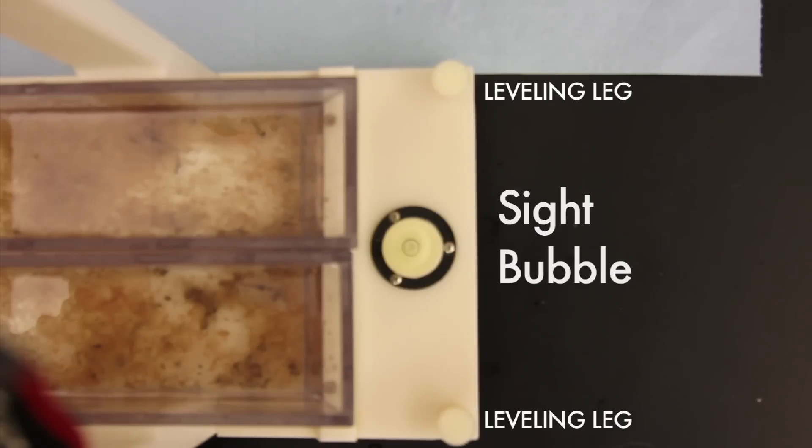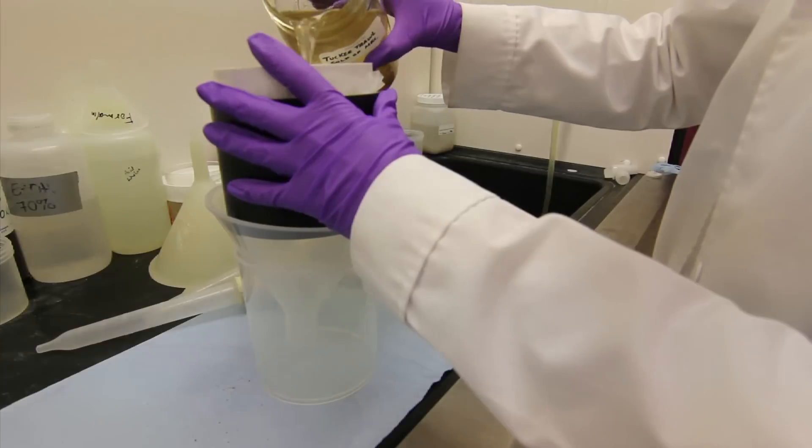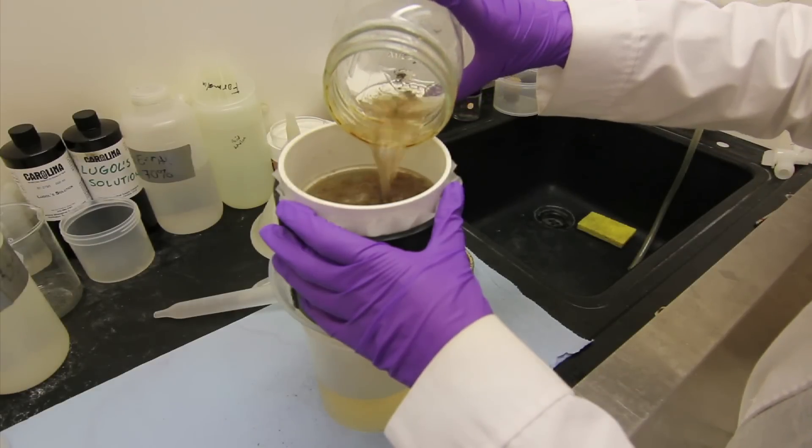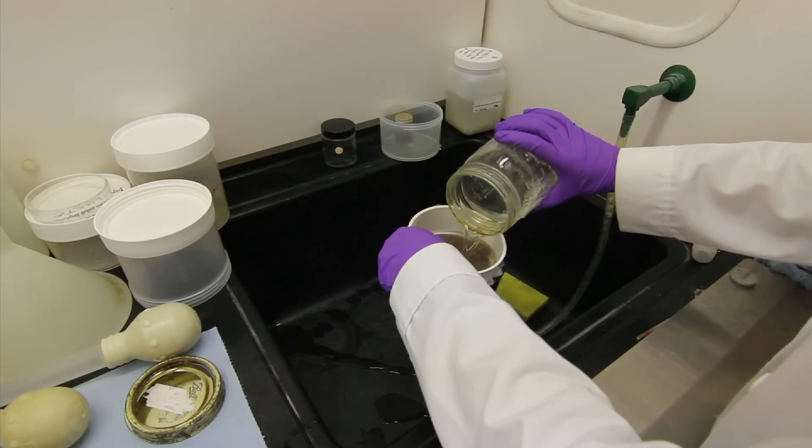Before you start, your splitter should be leveled. Adjust the legs so that the bubble indicates the splitter is level. If your sample is preserved in formalin or ethanol, you may wish to decant the preservative and replace it with water. This should be done within a fume hood to avoid exposure to toxic fumes.